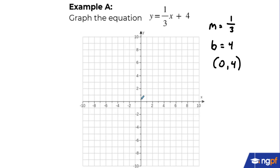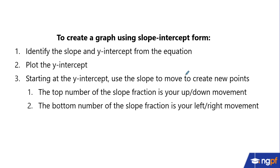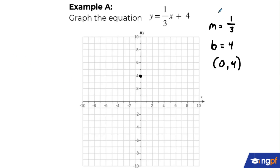Next, we plot the y-intercept at (0, 4) and put down a point. Then, starting at the y-intercept, we use the slope to create new points. The top number, 1, tells us to move up or down; the bottom number, 3, tells us to move left or right. The sign determines direction: positive means up and right, negative means down and left. Since both numbers are positive here, we move up 1 and to the right by 3, and put down a point.